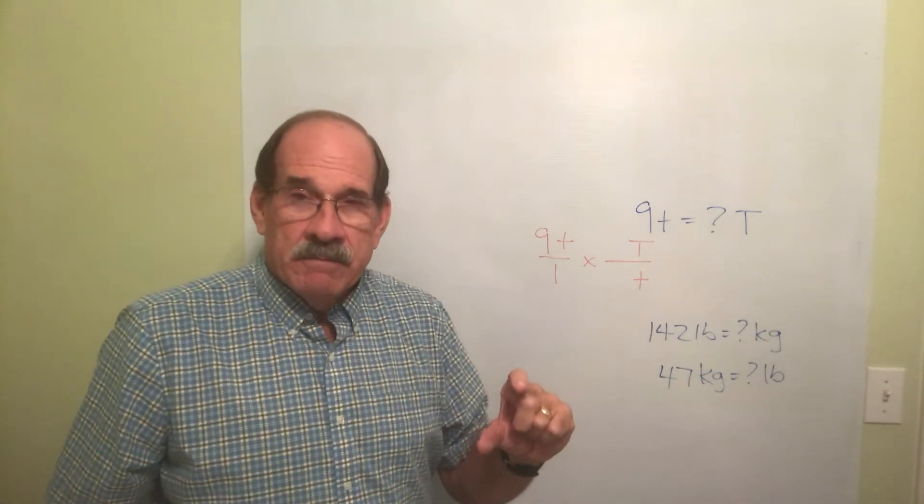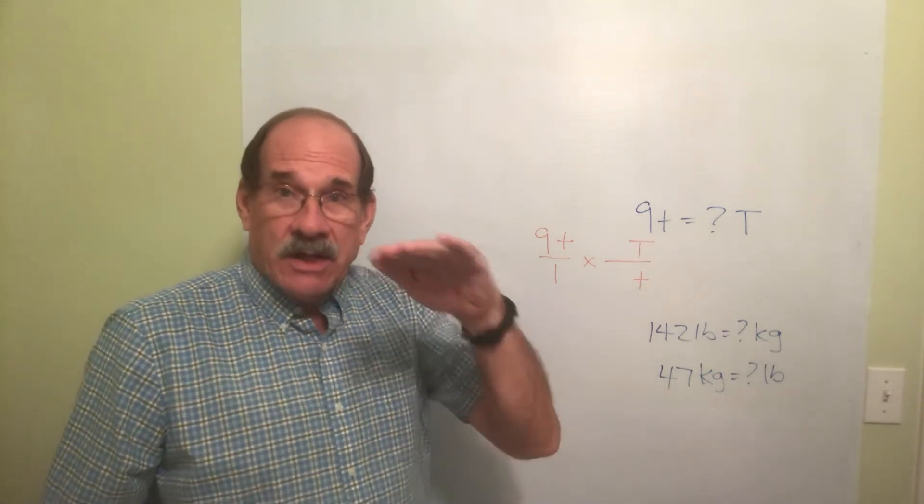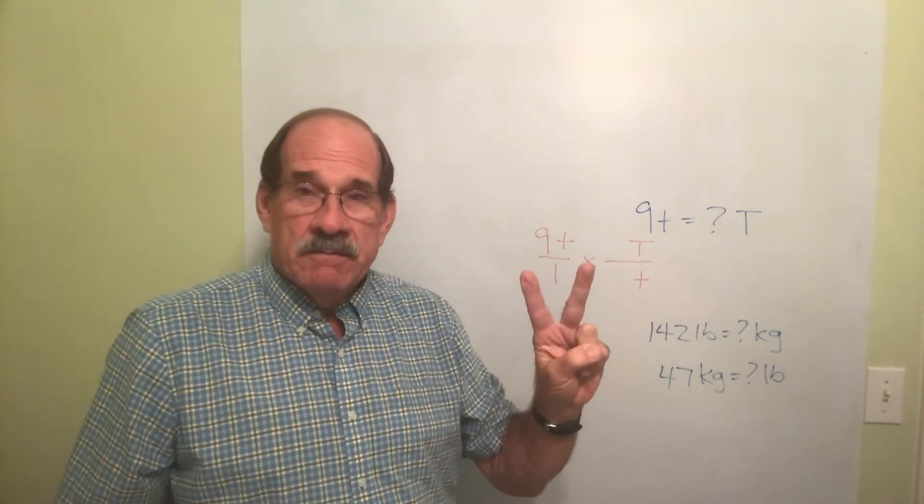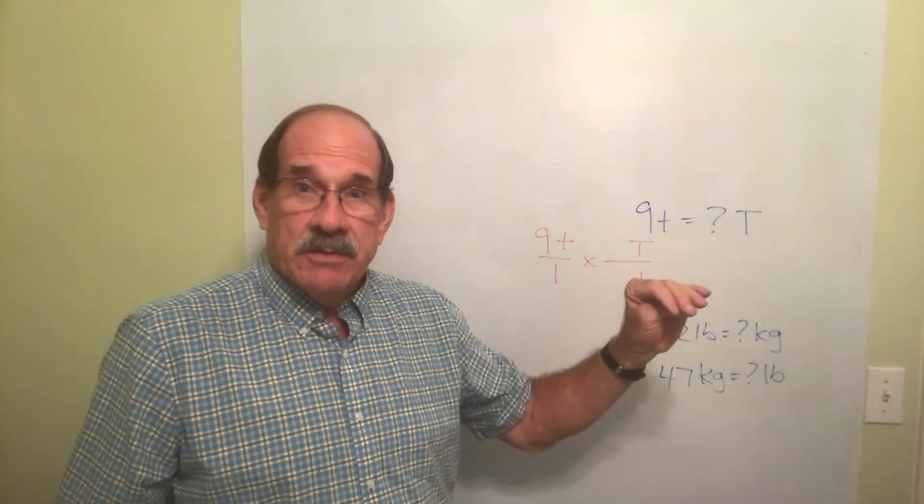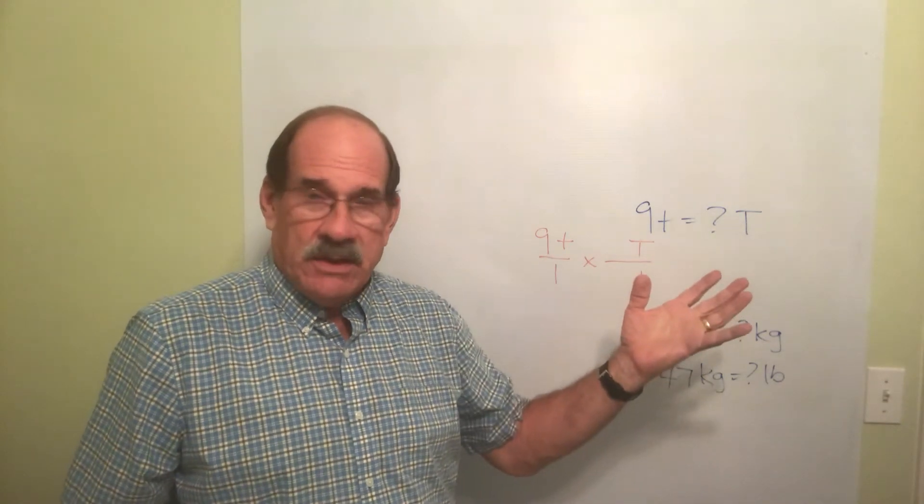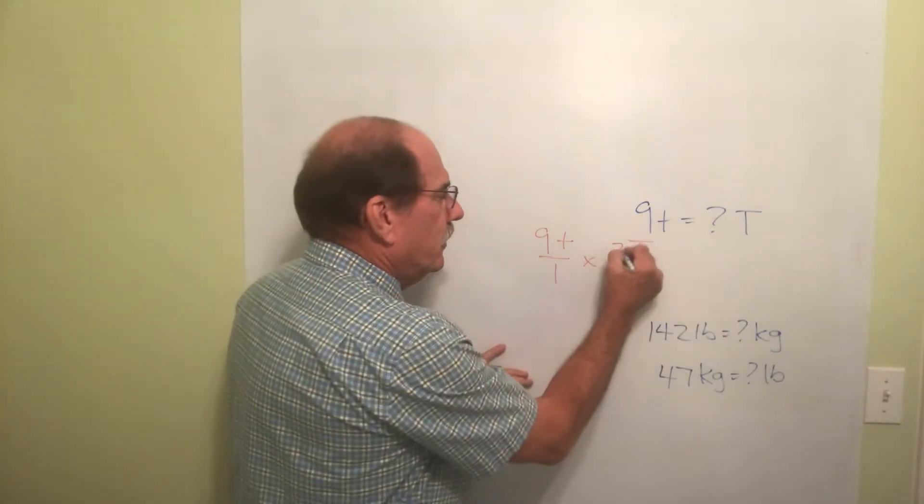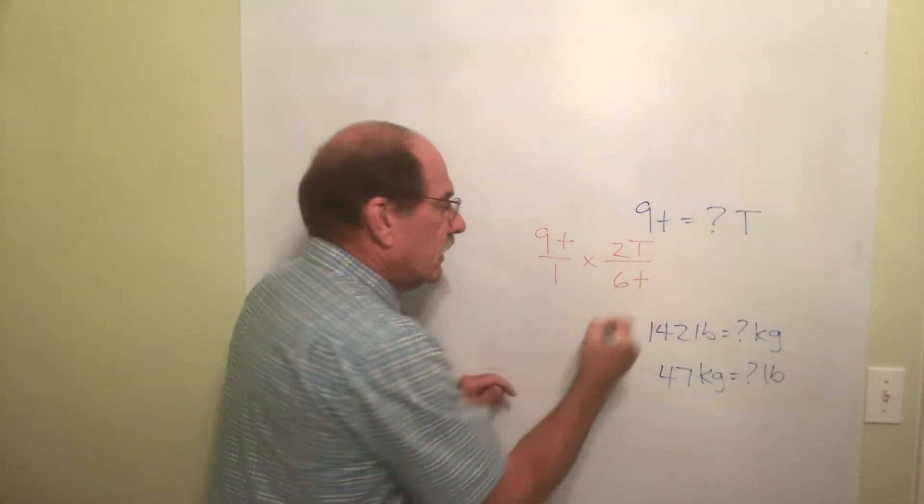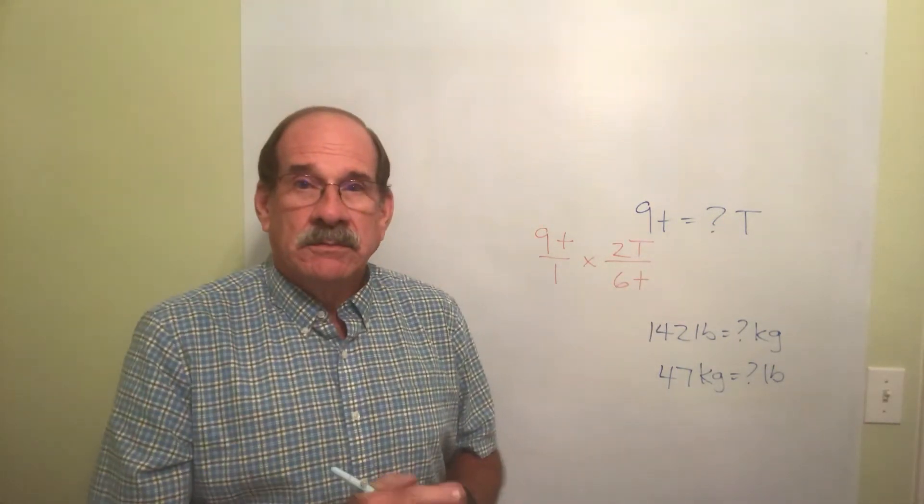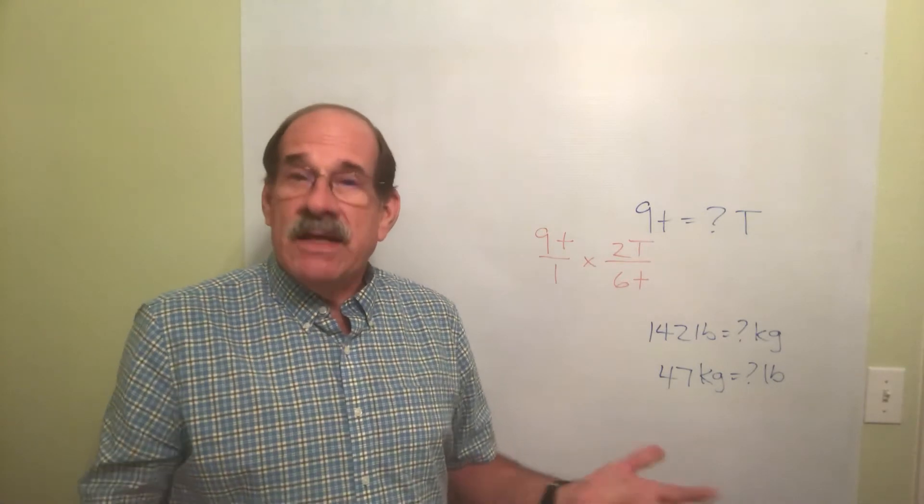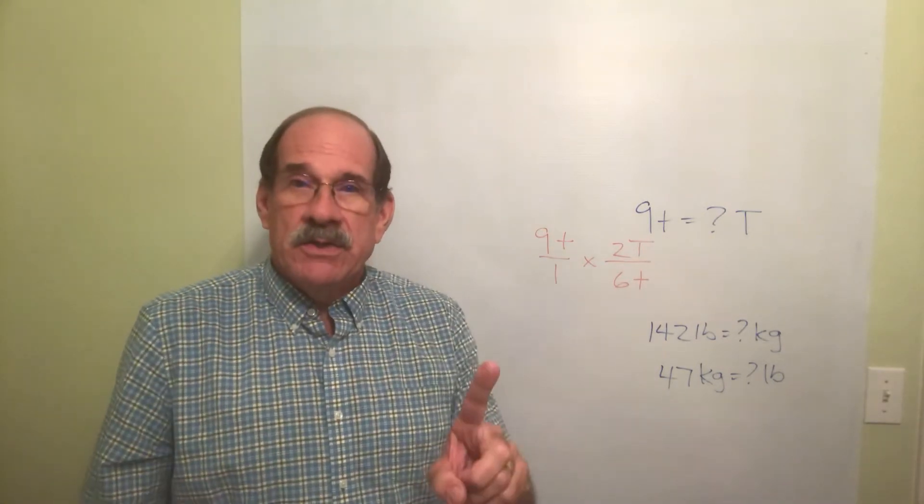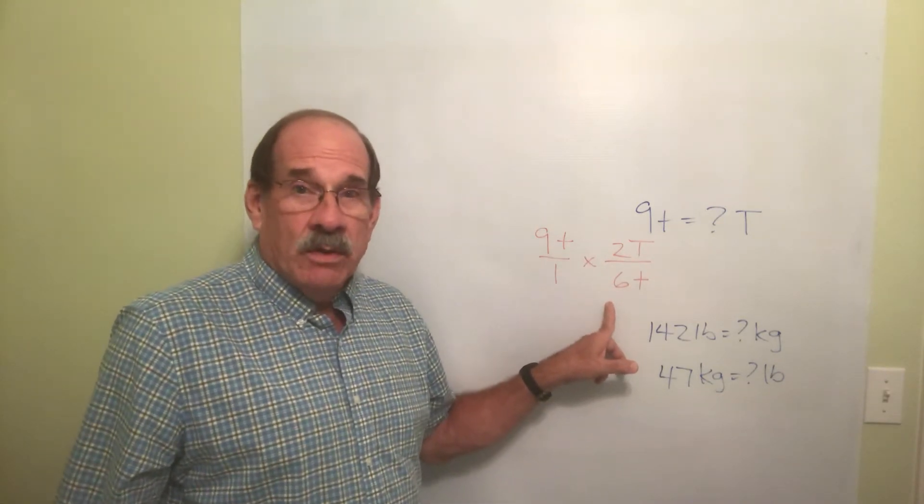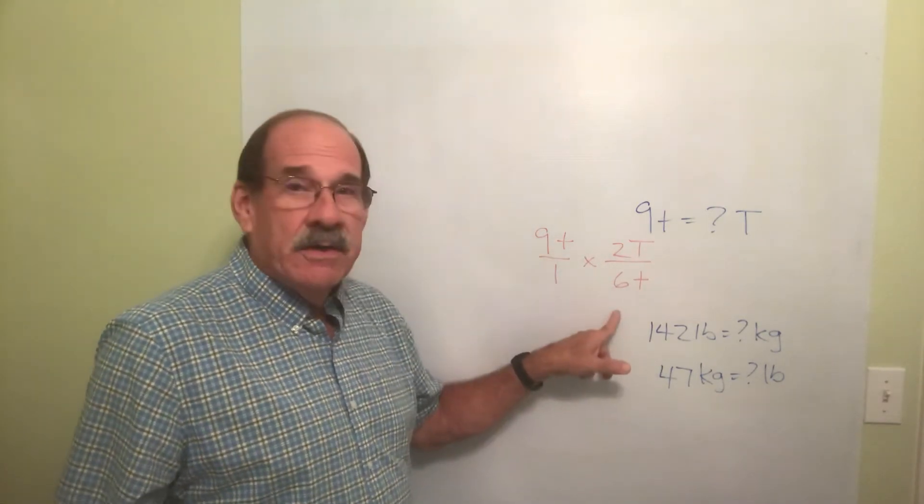But look at the medicine cup. Is it also true that the top line of the medicine cup is two tablespoons, and that's the same thing as six teaspoons? Yes it is. So two tablespoons equals six teaspoons is a true statement. If it is, it'll work.